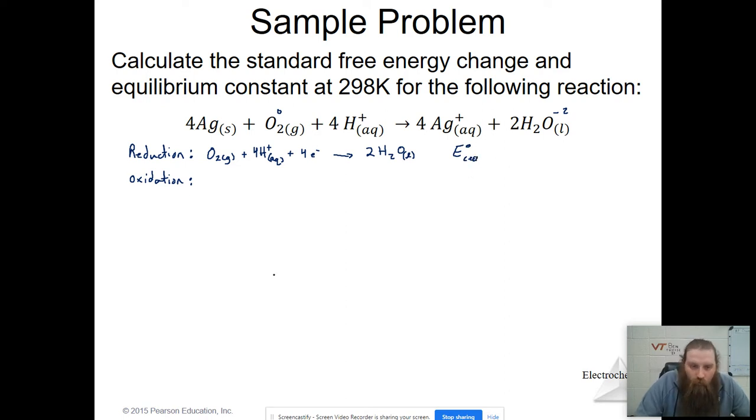And 4 electrons is forming our 2H2O as a liquid. And using the table in the book, I know that my E value for this reduction is plus 1.23 volts.